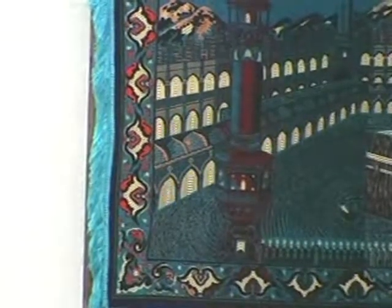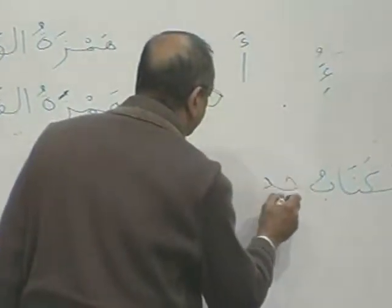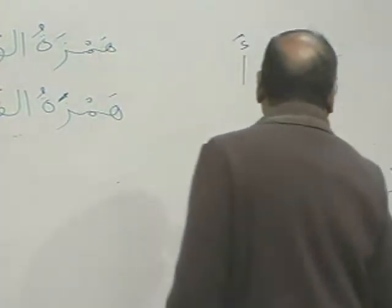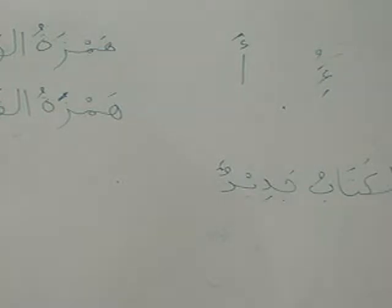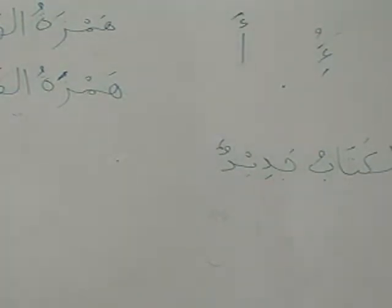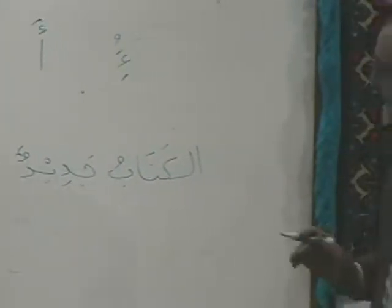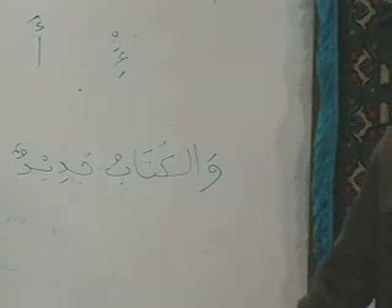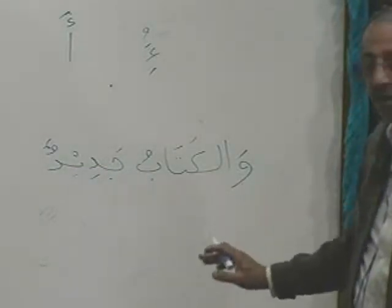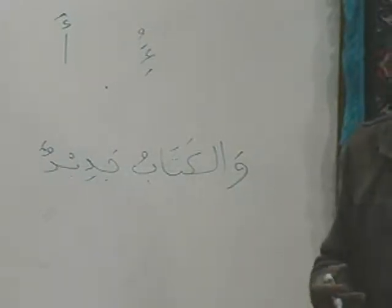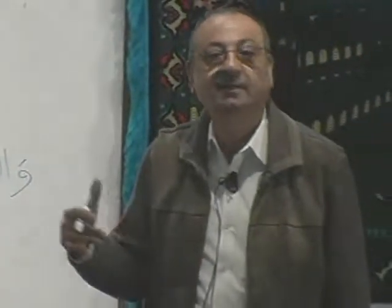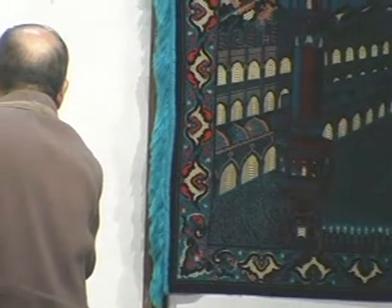For example, if I write Al-Kitabu Jadidun. Did I put anything on the Hamza? No. Why? Because it is Hamzatul Wasal. In Qurans from the Middle East, in order to make it 100% clear that this is Hamzatul Wasal, they put a little swad on it as the sign. There are about nine or so words in which there is a Hamzatul Wasal.